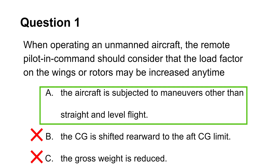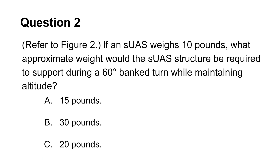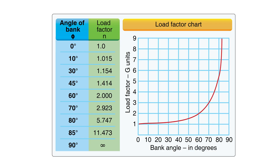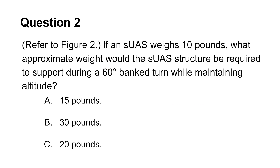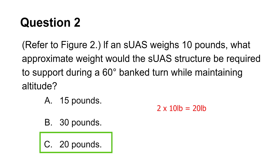If the aircraft flies a straight level path, the load factor will still be 1G even with higher weight. This question tests your understanding of how to use the load factor chart. First, locate 60 degrees on the horizontal axis and proceed upward to the curved reference line. Then, move to the left from the point of intersection to locate the load factor. In this case, it's 2 Gs. Next, multiply the load factor of 2 by the drone's weight of 10 pounds. This produces a result of 20 pounds. Thus, choice C is the answer.